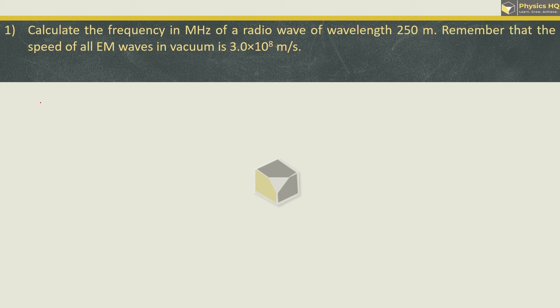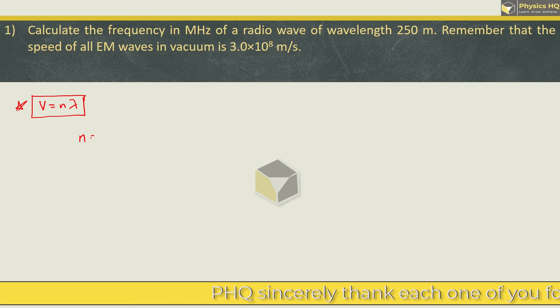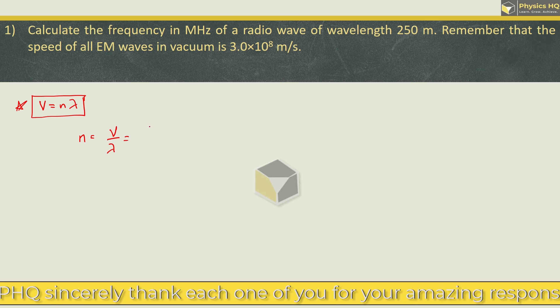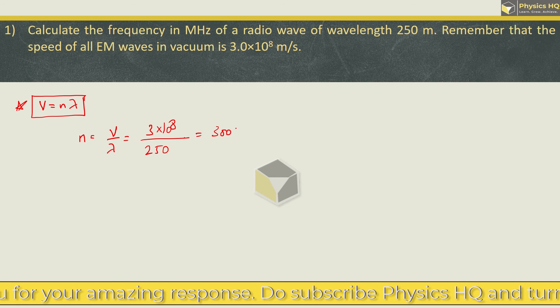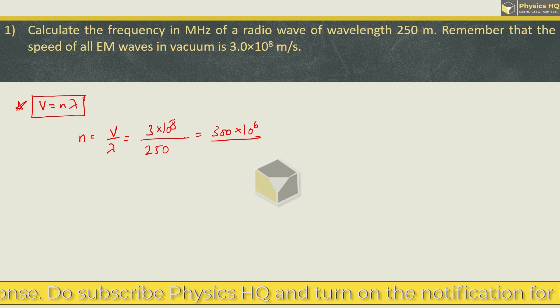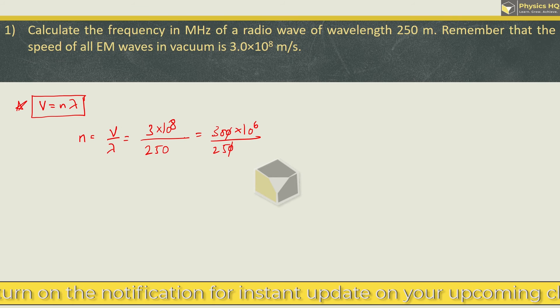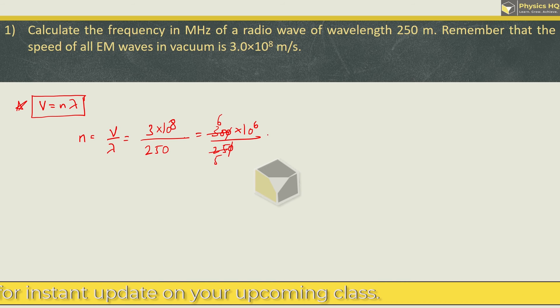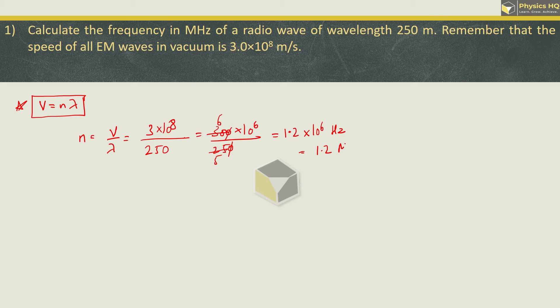Now the formula that we will be using is V is equal to N lambda. We are supposed to find the frequency, so N is equal to V by lambda. Velocity or speed is given as 3 into 10 raise to 8, wavelength is 250. We can write this as 300 into 10 raise to 6 divided by 250. When we cancel and divide by 5, we get 6 by 5 which is 1.2 into 10 raise to 6 hertz. This is the frequency. And 10 raise to 6 is nothing but mega, so this is 1.2 megahertz.